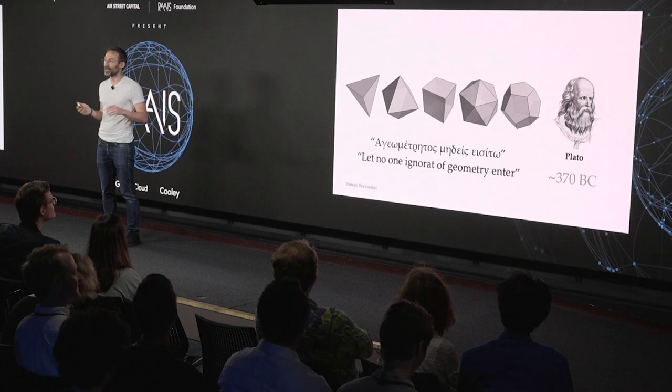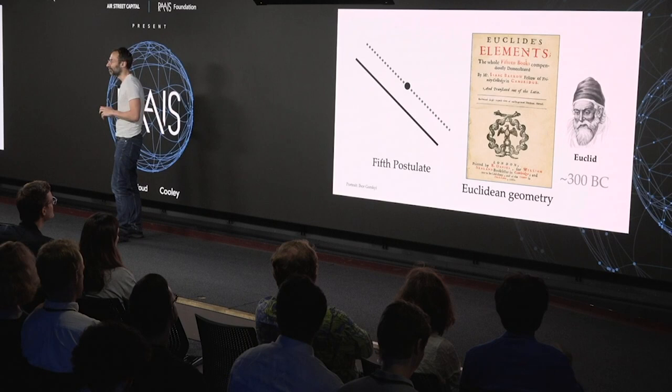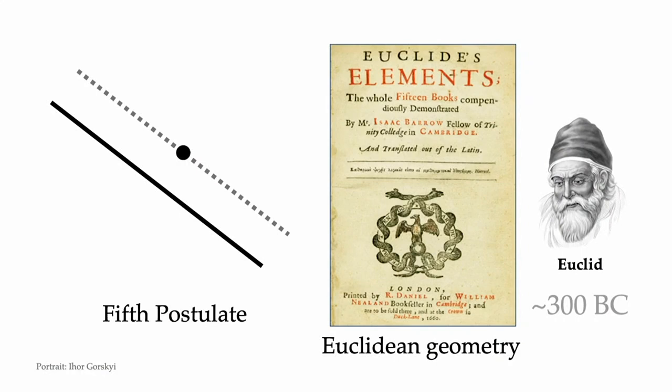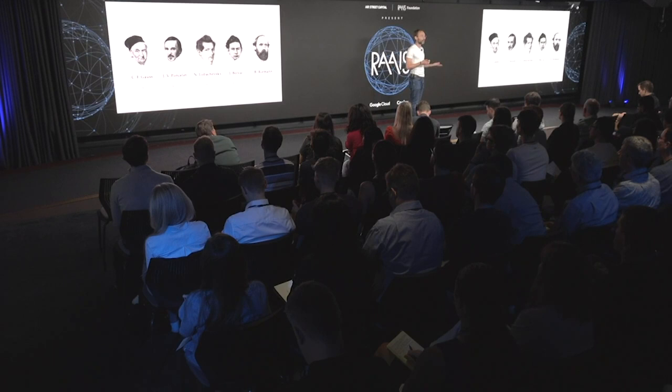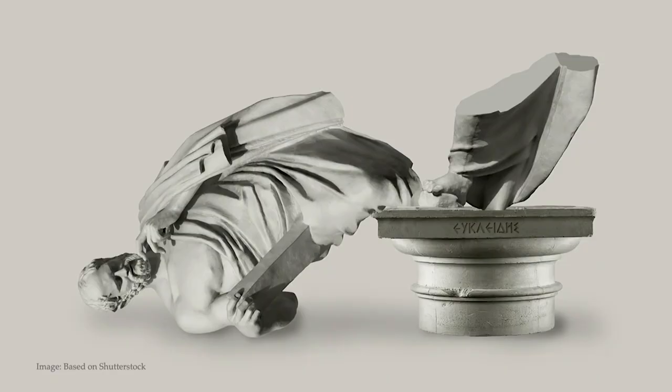The Greeks are also credited with building the formal foundations of geometry and the famous postulates of Euclid — that's the geometry we still teach at school, Euclidean geometry. One of these postulates stood out for many hundreds, if not thousands, of years. A row of illustrious mathematicians tried to prove it to no avail until the 19th century, where it was first recognized that you can abolish it altogether and create different types of geometries called non-Euclidean geometries, shattering Euclid's monopoly that had stood for more than 2,000 years.